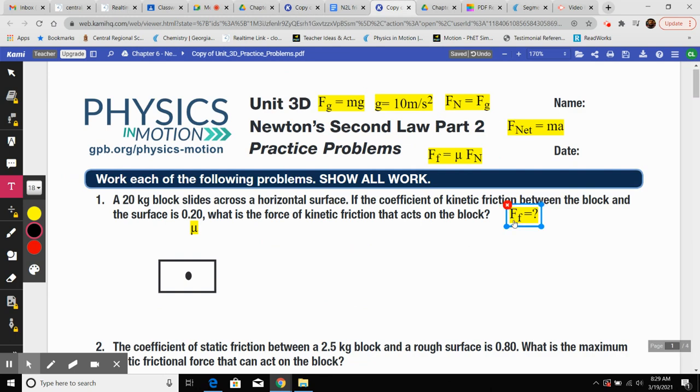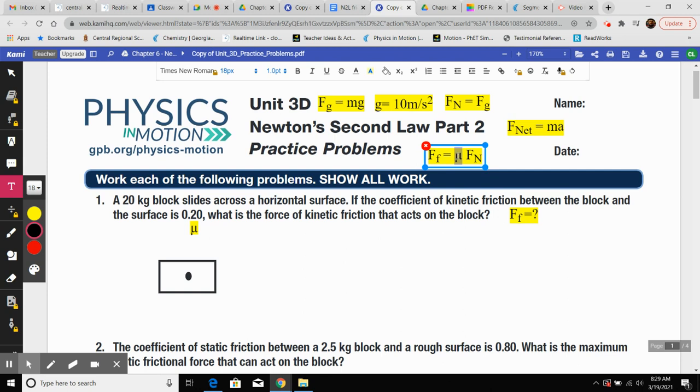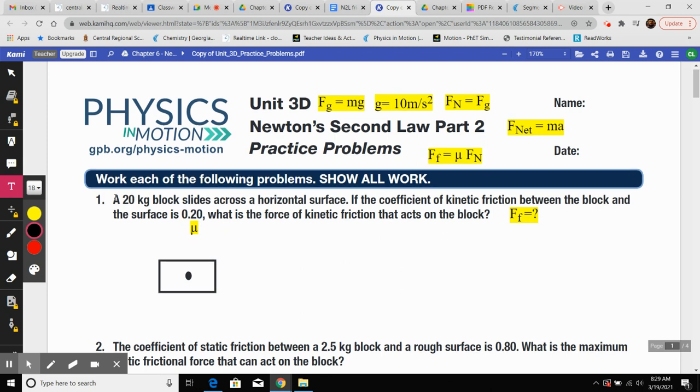So this one will ask for friction force F sub F. We need coefficient of friction mu and normal force. Here's our mu. So I pasted it here, literally went Control C, copied it, and pasted. So I need mu and normal force. I have mu. I don't have any other number here.